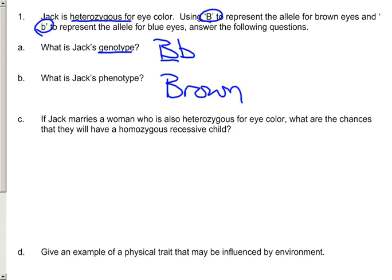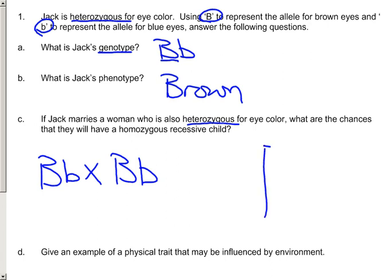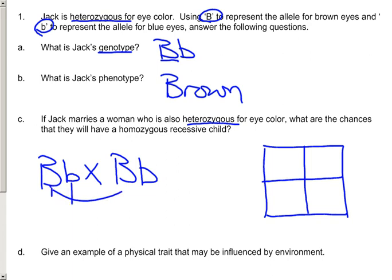If Jack marries a woman who is also heterozygous, so now we have two heterozygous individuals, their cross would look something like that. What are the chances they will have a homozygous recessive child? Anytime we're trying to find percentages, we want to set up a Punnett square. We're going to distribute out our different alleles, like so, and then we do our crosses.